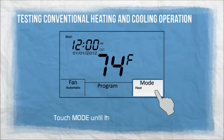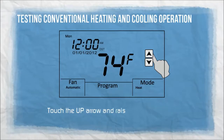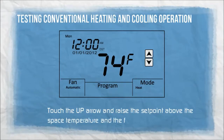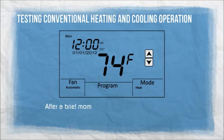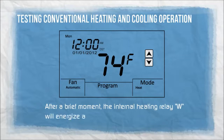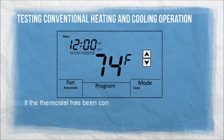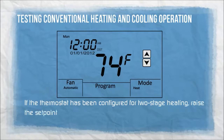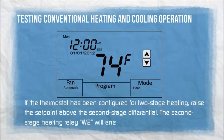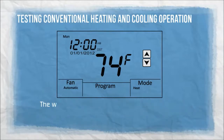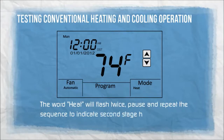Touch MODE until the word HEAT appears. Touch the up arrow and raise the set point above the space temperature and the first stage differential. After a brief moment, the internal heating relay W will energize and the heating system should operate — the word HEAT will flash continuously. If configured for two-stage heating, raise the set point above the second stage differential; the second stage heating relay W2 will energize. The word HEAT will flash twice, pause, and repeat to indicate second stage has been energized.